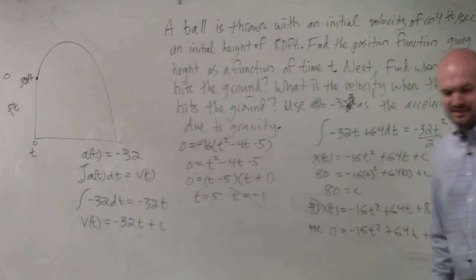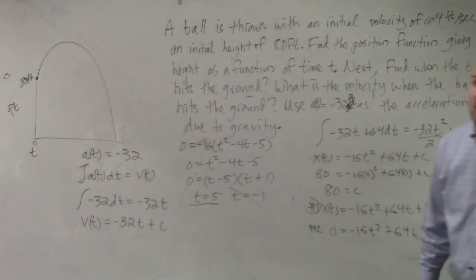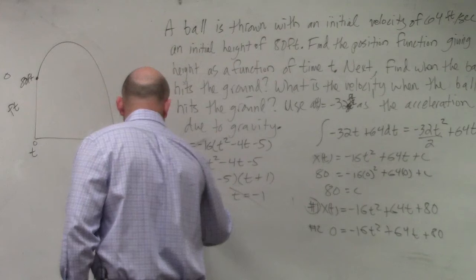So t equals 5 and t equals negative 1. However, ladies and gentlemen, does it make sense for our time interval to be negative? No. So t equals 5 is going to be when the ball hits the ground. So that's answer to question number two.